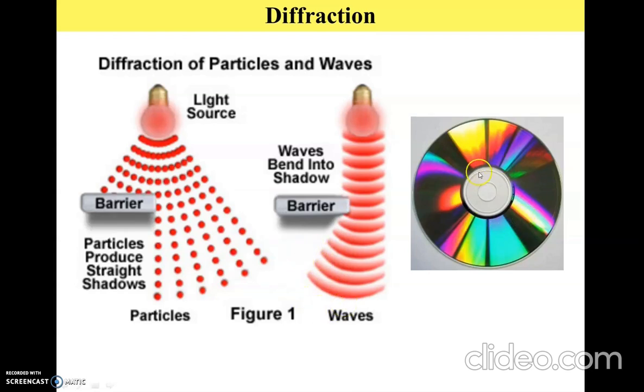Some of you might have observed if you have a CD or a DVD and if you keep it at a certain angle, you will observe that it gives out colors. And again, this is an example of diffraction happening at the surface of this CD, because the CD or DVD has these grooves and edges, and the light gets diffracted at the edges causing this colored pattern.